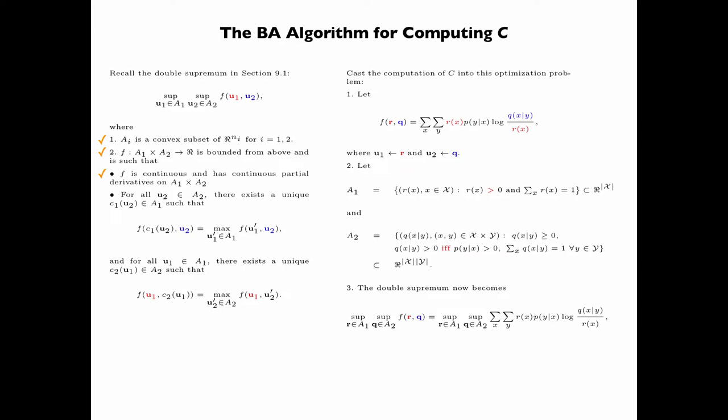The double supremum now becomes: sup over R in A1, sup over Q in A2, summation over x, summation over y, Rx times P(y given x) log(Q(x given y) divided by Rx).